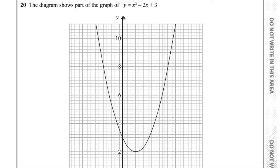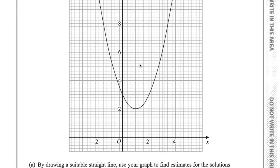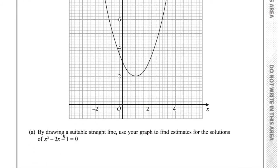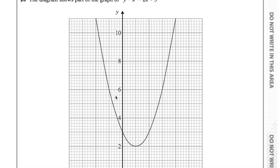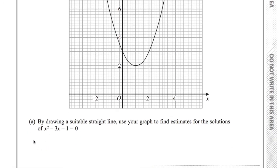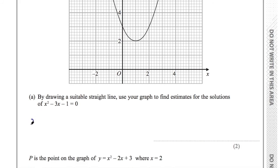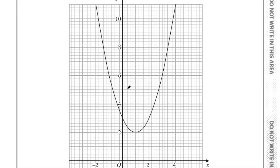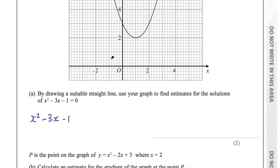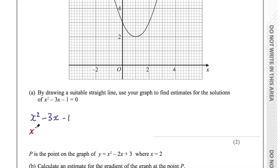The idea of this question is that by combining this equation with the equation of a straight line, we can make it equal to this equation. Let's compare these two equations: x squared minus 3x minus 1, and x squared minus 2x plus 3. What I want to do is find the difference between these two equations.